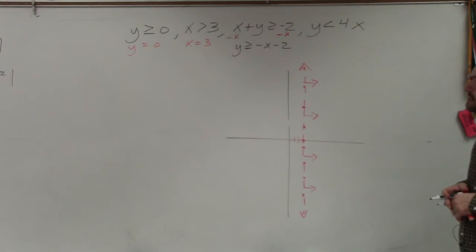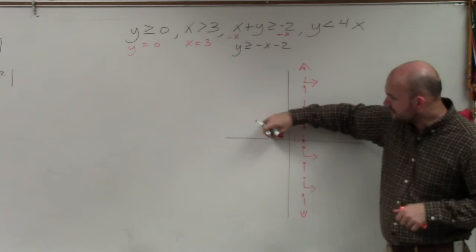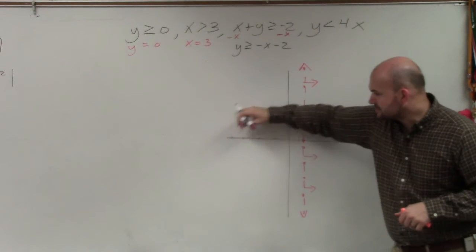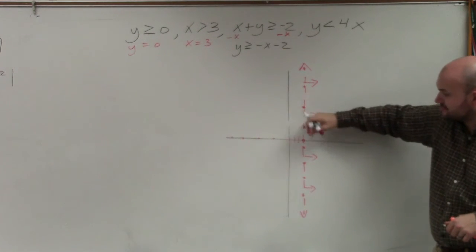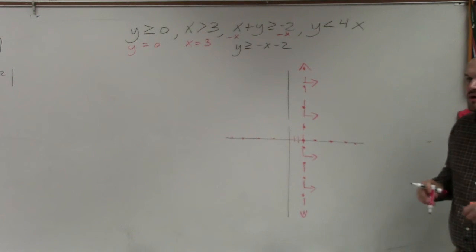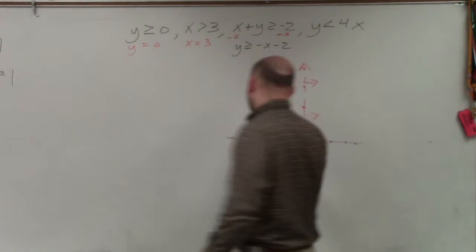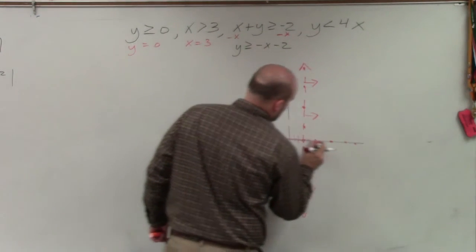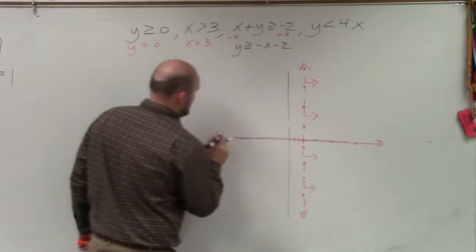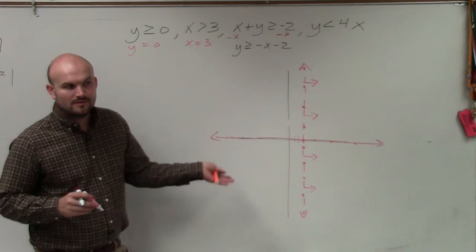The next one, y is greater than or equal to 0. So y equals 0 is right here. Doesn't matter if x is positive or negative, y equals 0. So when y is greater than or equal to 0, that's going to be a solid line. And greater than is going to be y values that are above or below? Above.